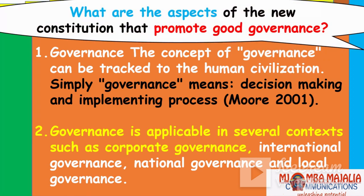What are the aspects of the new Constitution that promote good governance? The concept of governance can be tracked to human civilization. According to many, governance means decision-making and implementing processes. Many people cannot make a decision — many people do not know how to make a good decision. Good governance means you use a Constitution to make a good decision, not through whims or feelings, not just because you have friends.